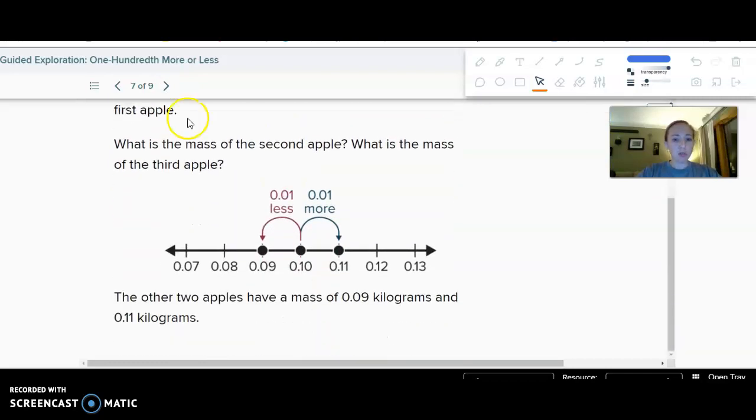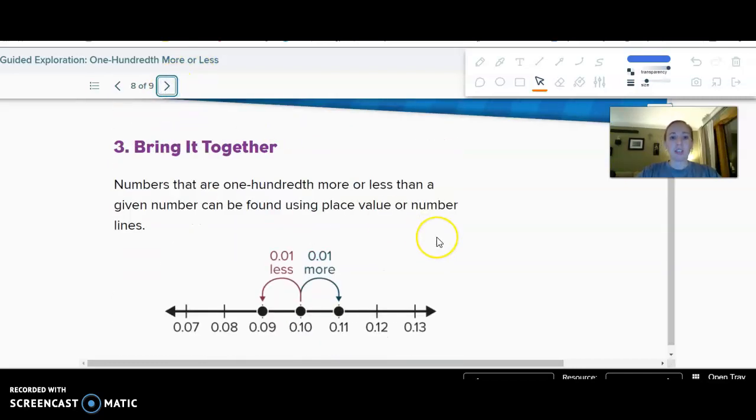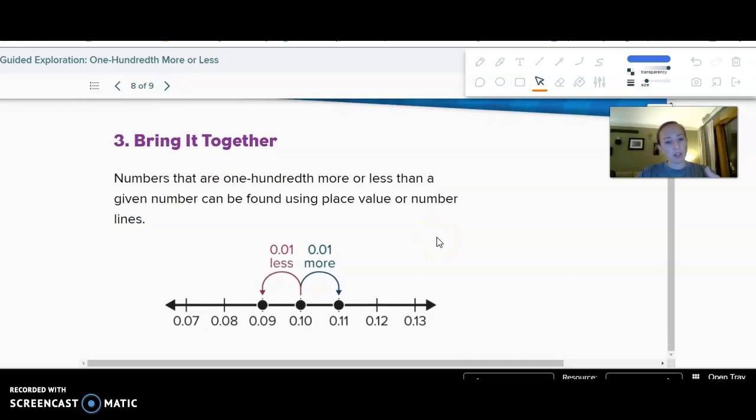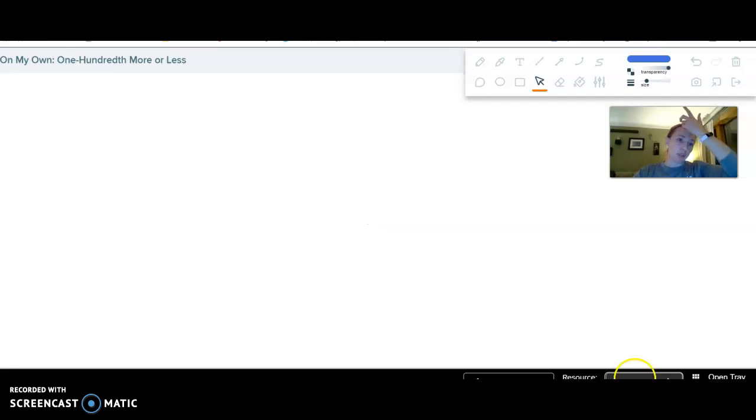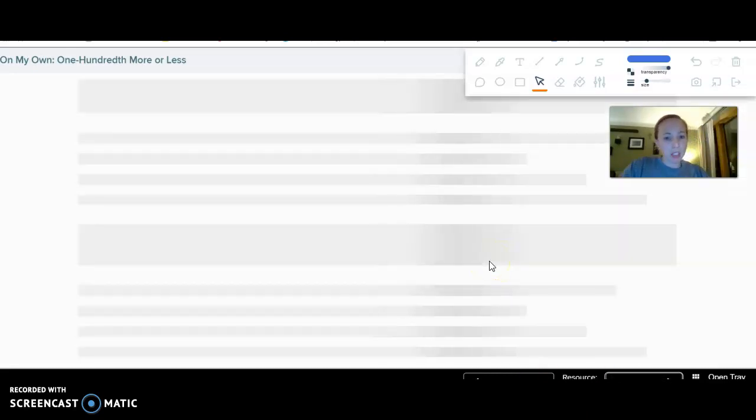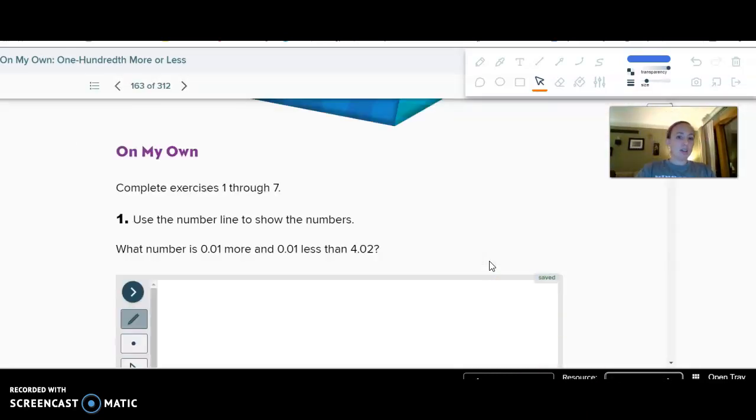All right, so we found one-tenth more, one-tenth less. We can use place value or a number line, whichever makes more sense to you. Let's do some examples, trying to keep it moving.